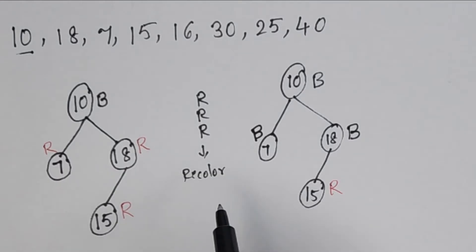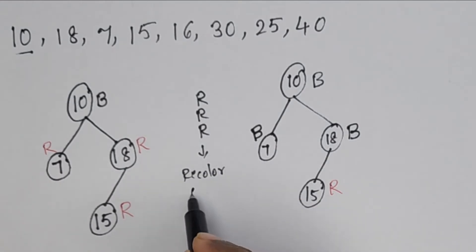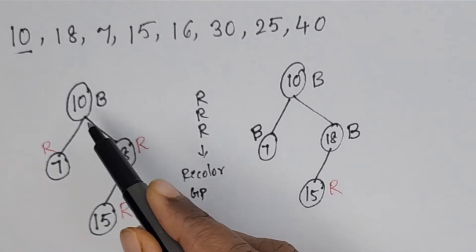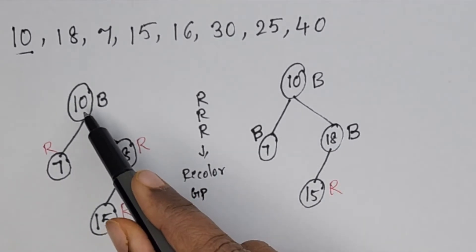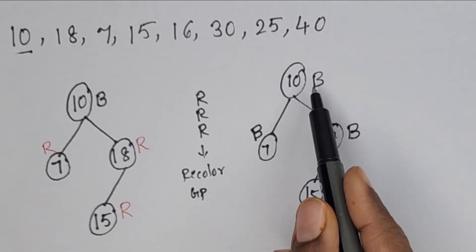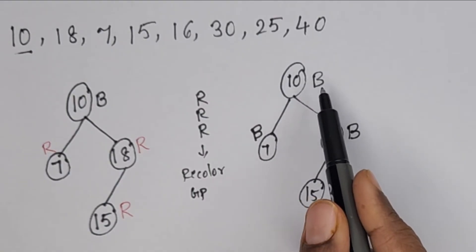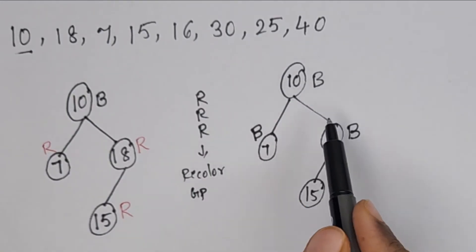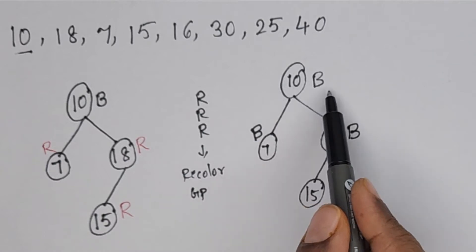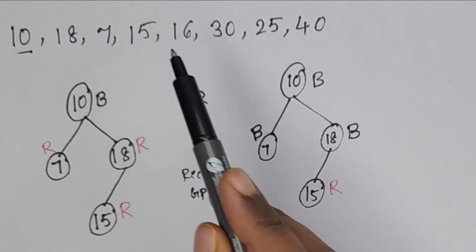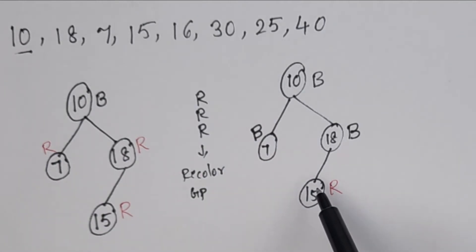Next, we change the color of the grandparent (parent's parent). The parent's parent is 10. But 10 is the root node. If it were not the root, we would change its color. Since 10 is root, no need to change its color, and we can add the next element.